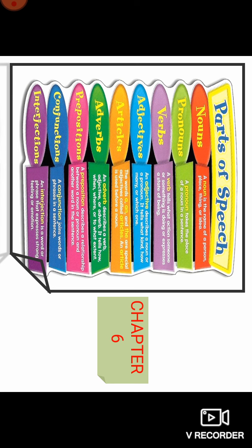We have 8 types of parts of speech. Here I am adding one more — articles. The words 'a', 'an', and 'the' are special adjectives called articles, and an article is used before a noun. Now today you will learn about prepositions, conjunctions, and interjections.